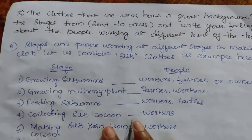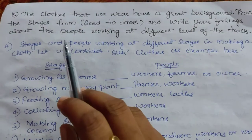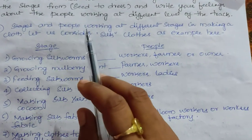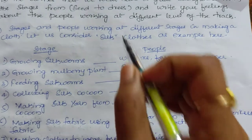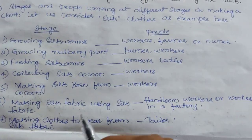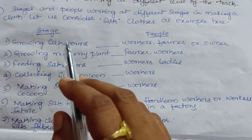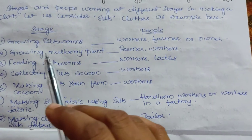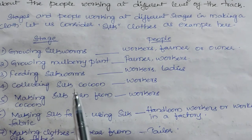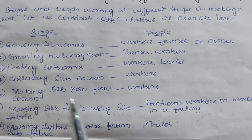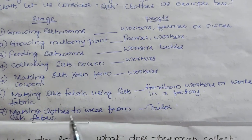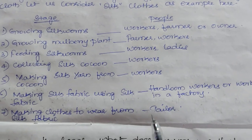Question 15: the clothes we wear have a great background — track the stages from seed to dress and write your feelings about the people working at different levels. Taking silk as an example, the stages are: growing silkworms by farmers and workers; growing mulberry plants by farmers and workers; feeding silkworms by workers; collecting silk cocoons by workers; making silk yarn from cocoons by workers; making silk fabric using handloom workers or factory workers; and finally making clothes from silk fabric by the tailor.